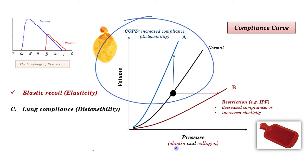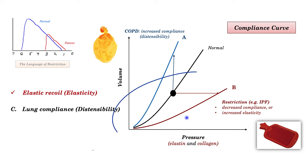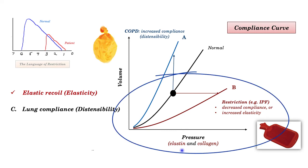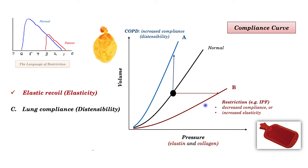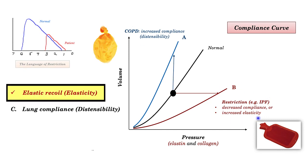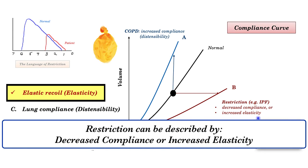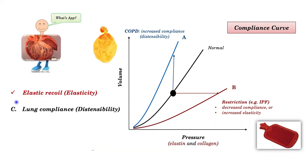That lower pressure contrasts with restrictive disease. In restriction, if you think about increased elastin and increased collagen, to get any volume of air in it has to take place under increased pressure. The terms to describe this are compliance — increased compliance with COPD, or decreased compliance with restriction. The other language of restriction includes elasticity, elastance, or in this case, increased elastic recoil. This concept of the compliance curve is not going away — you're going to see it again when we get into cardiology.